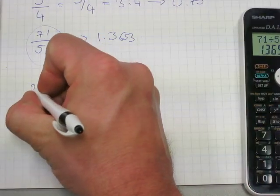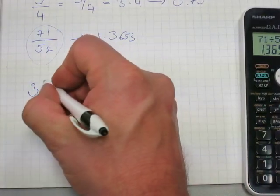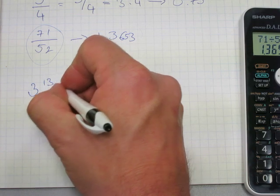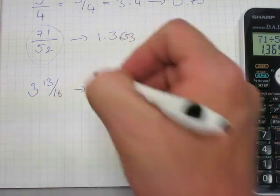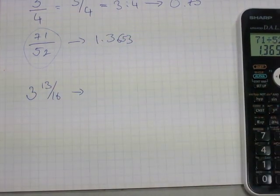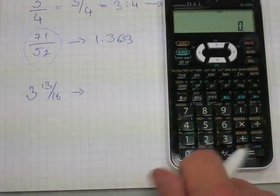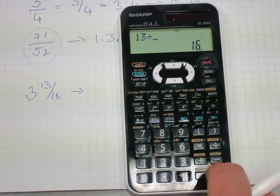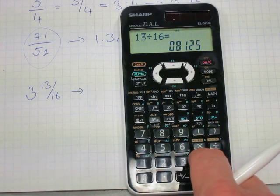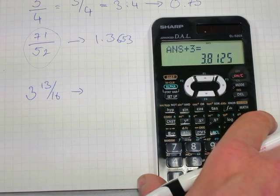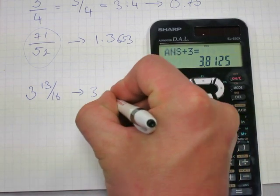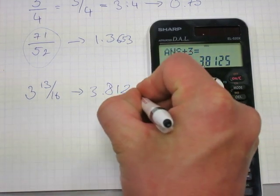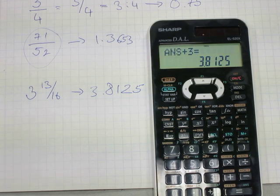And lastly let's look at a mixed number. Say 3 and 13 sixteenths from a tape measure. This is how you do it. 13 over 16 equals that. And then you can just add the 3 to it there. 3.8125 is your decimal equivalent for the fraction 3 and 13 sixteenths.